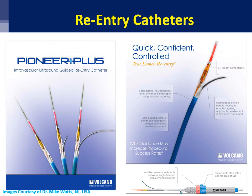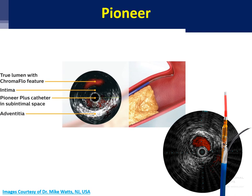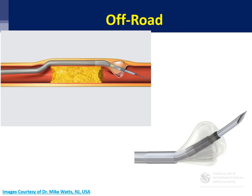There are other re-entry catheters. Pioneer Plus is a very powerful one — what's nice is it uses IVUS guidance, intravascular ultrasound. So you can visualize the true lumen not only on angiogram but also through intravascular ultrasound, putting in color flow to see the true lumen. Here the catheter is subintimal, and you can see the true lumen with the chromoflow feature showing actual blood flow. You direct the needle right at the true lumen, knowing exactly where you're throwing it. You can also change the length of the throw — if the lumen is farther, you extend it; if closer, you shorten it.